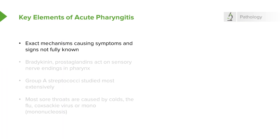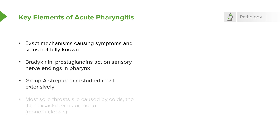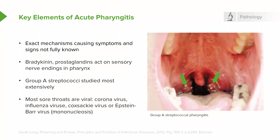The exact mechanisms causing the symptoms and signs of pharyngitis are not fully understood. There's some evidence that bradykinin and prostaglandins act on sensory nerve endings, but that's not absolutely clear. The organism studied most extensively is group A streptococcus. But actually, most sore throats are viral, caused by common cold viruses like coronavirus, influenza virus, Coxsackie, or Epstein-Barr virus, notorious for causing infectious mononucleosis. Here is a picture of group A streptococcal pharyngitis, but more about that later.